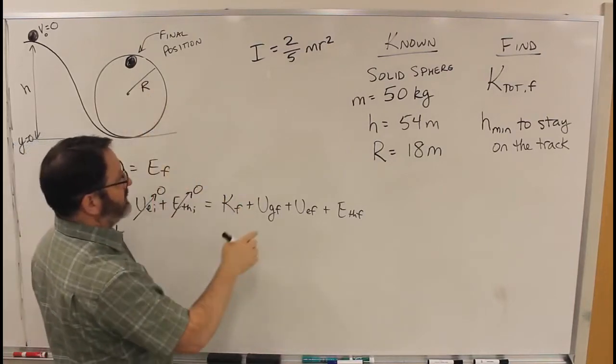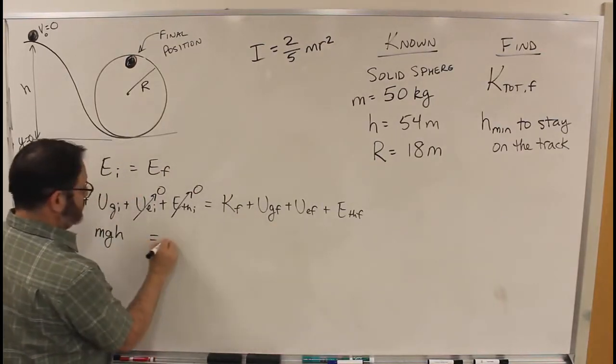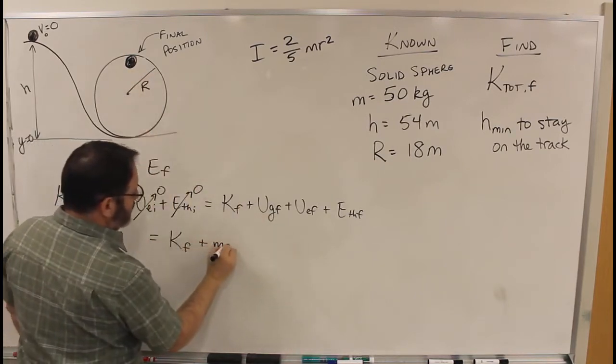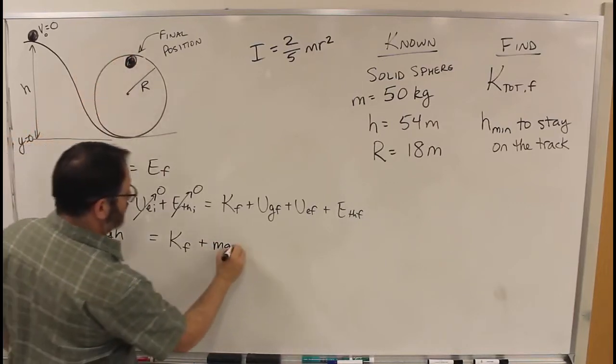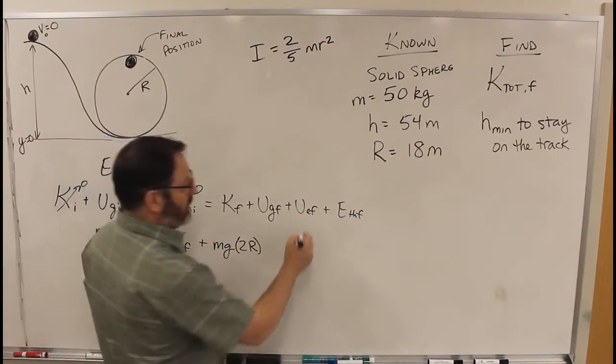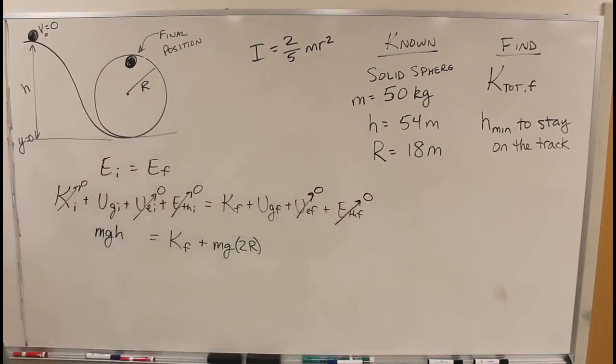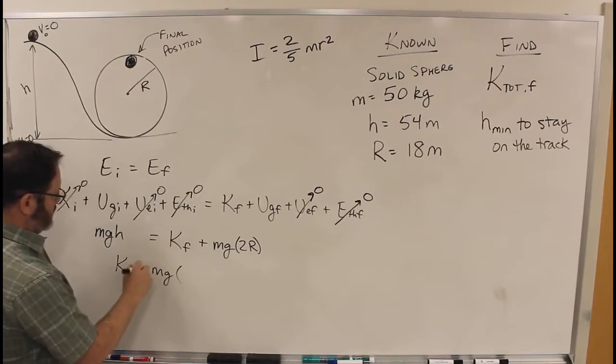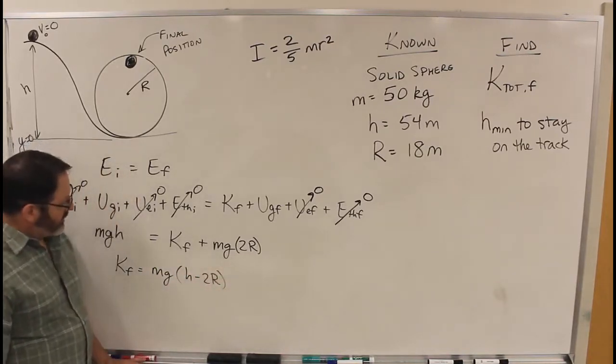Final kinetic, yes, that's what we're looking for. Final gravitational, so final kinetic, final gravitational, that is MGH times height above here. This is R, so 1R, 2R. So MGH times 2R, plus no spring and no thermal. Okay, so K final is MGH times H minus 2R, if I did my math right there. I took this, subtracted it from both sides, and then factored out an MGH.